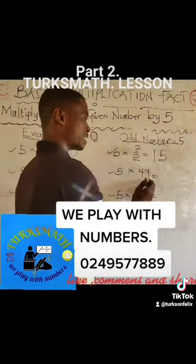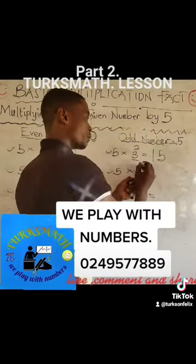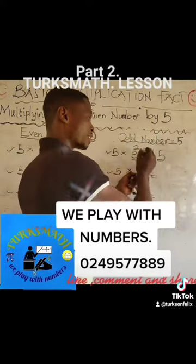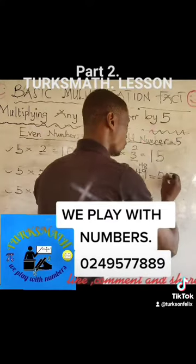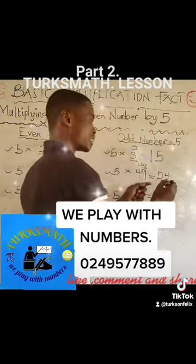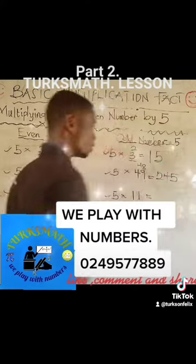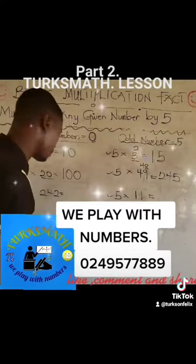5 times 49 — this is a 4-digit number. What number comes before 49? 48. You divide 48 into 2 parts — you have 24. Increase it by 5. You have 245.